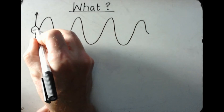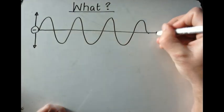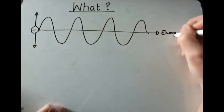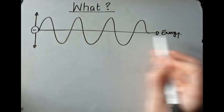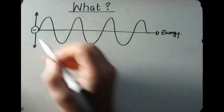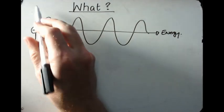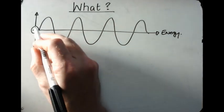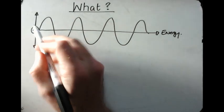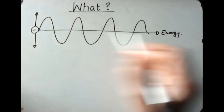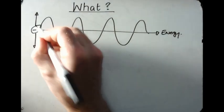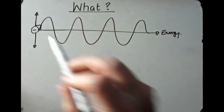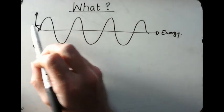This wave is transverse because this is the direction of energy — energy is going that way, whereas the wave is going up and down; they're going perpendicular. If the oscillation is perpendicular to the direction of energy — perpendicular means at right angles — then the wave is transverse.